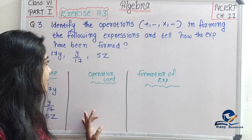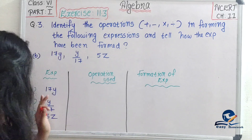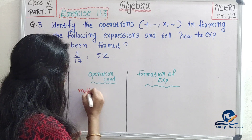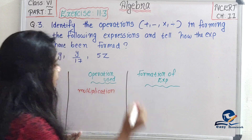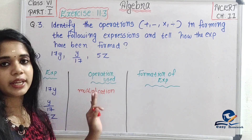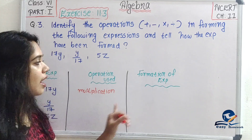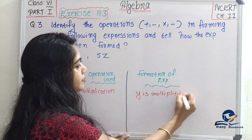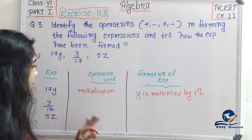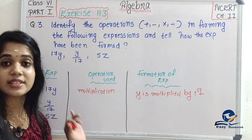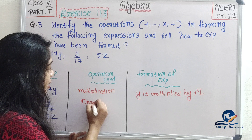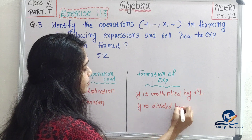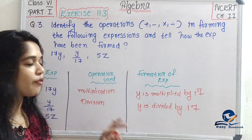Next expressions: 17y, y by 17, and 5z. 17y is used with operator multiplication — 17 into y. y by 17 uses operator division — y is divided by 17. Next, 5z uses operator multiplication.